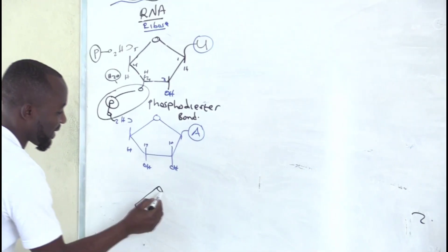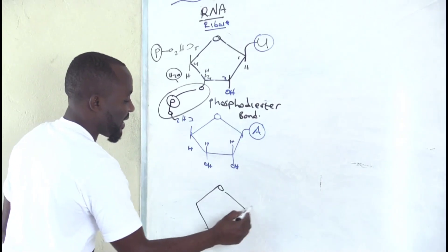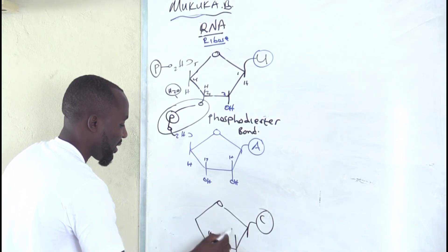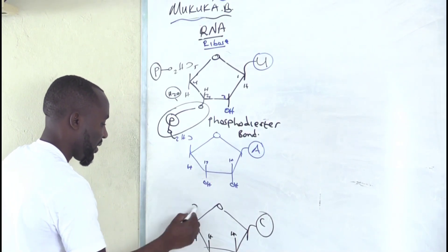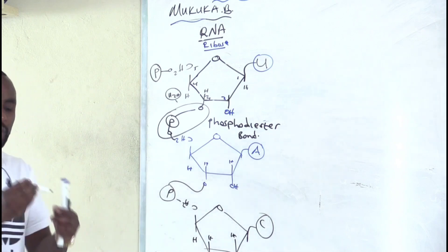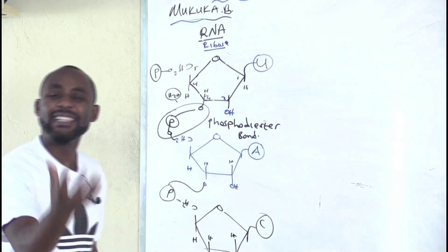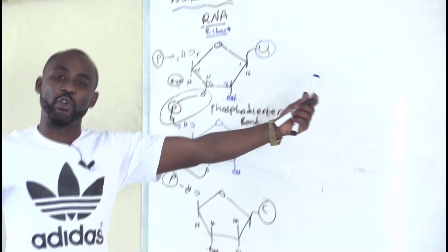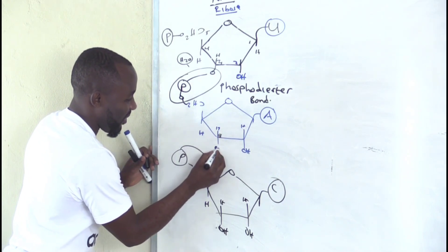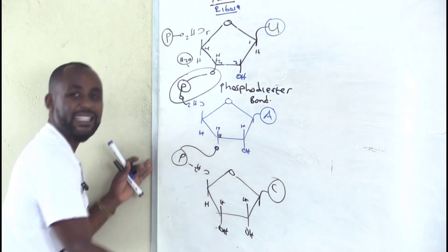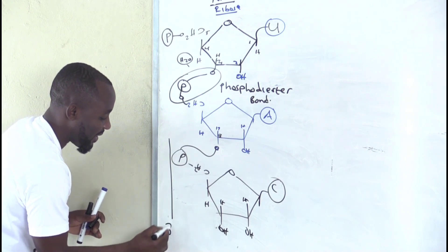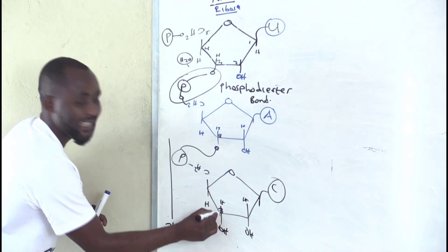You can continue and add another sugar — this time use a different base, cytosine. You should remember that whenever you are adding a nucleotide to another to form a polynucleotide long chain, we always add it on carbon number three. That's why the end here is called the 3-prime end, because that's where we add.